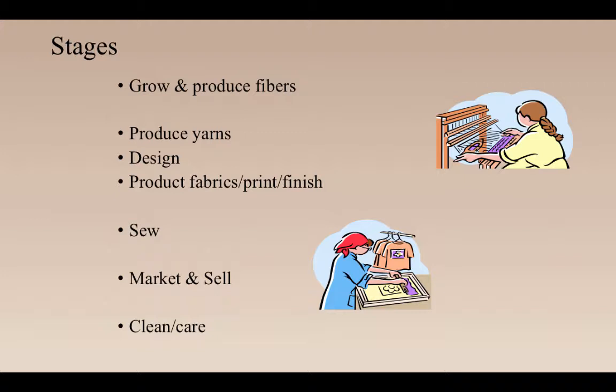Once you have fibers, they get spun into yarn through different spinning processes — that's covered in AMM 160, 260, and 360. You take those yarns and design fabrication: knitting, weaving, printing, surface textures. The design determines how the fabric is going to be knitted or woven.